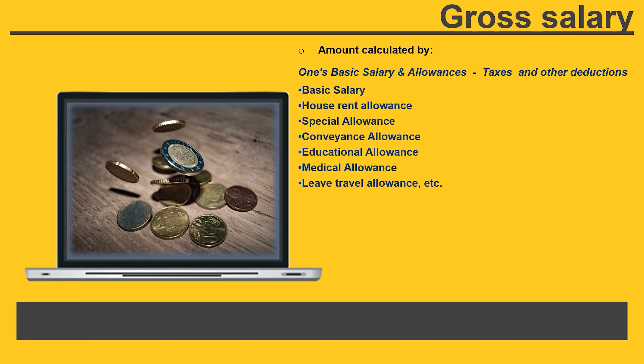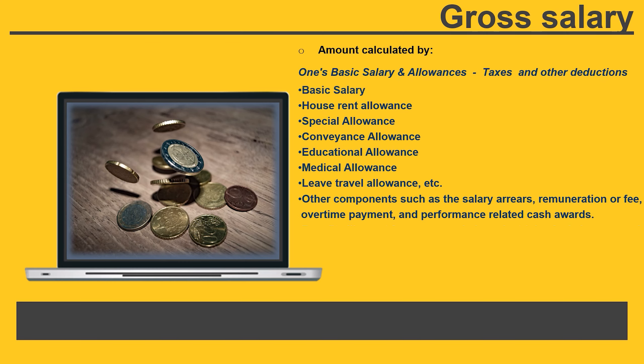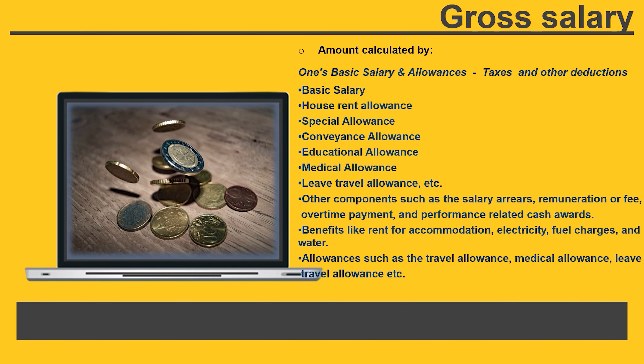Gross salary also involves other components such as salary arrears, remuneration or fees, overtime payment and performance-related cash awards. Benefits like rent for accommodation, electricity, fuel charges and water are included. Allowances such as travel allowance, medical allowance and leave travel allowance are also part of this.